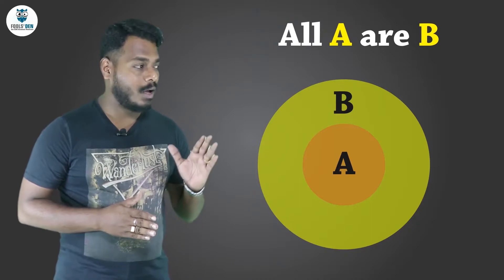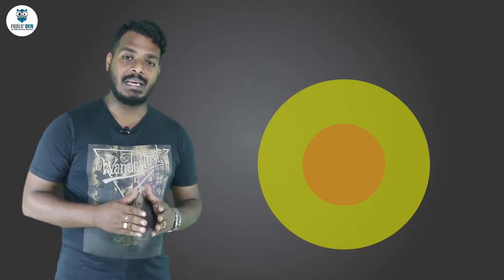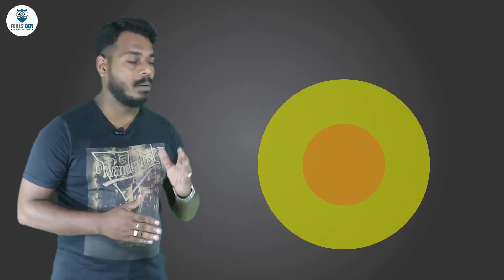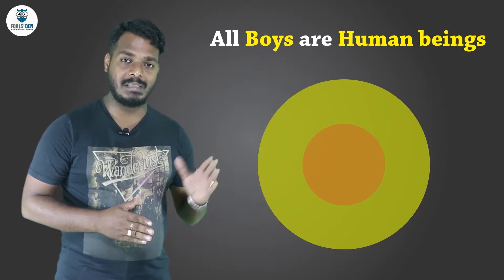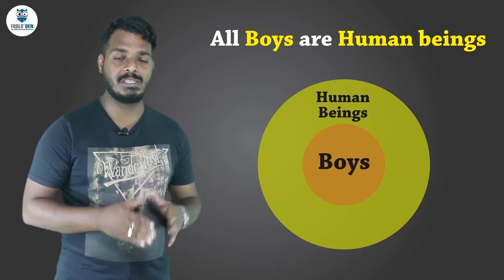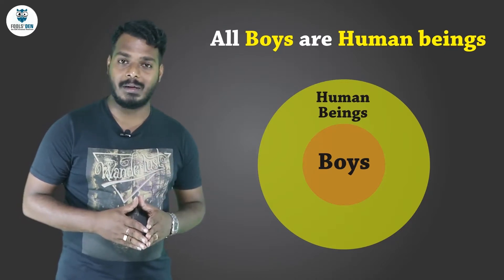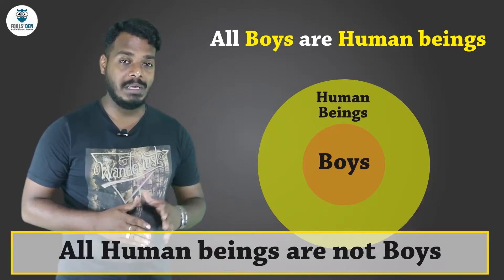So we can say that all A are B. Similarly, say I take another example: if I say that all boys are human beings, it will be represented something like this. The set representing boys would come inside the set that represents human beings.